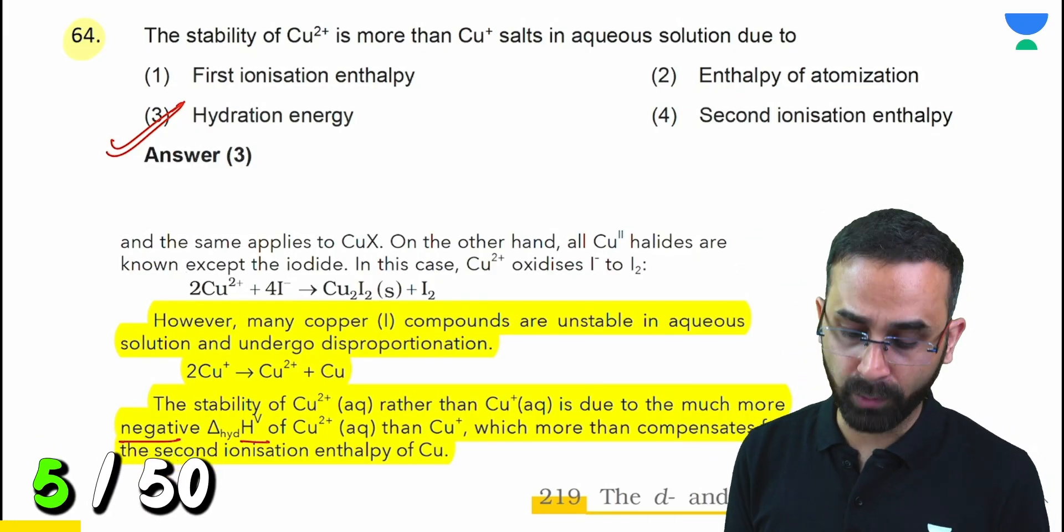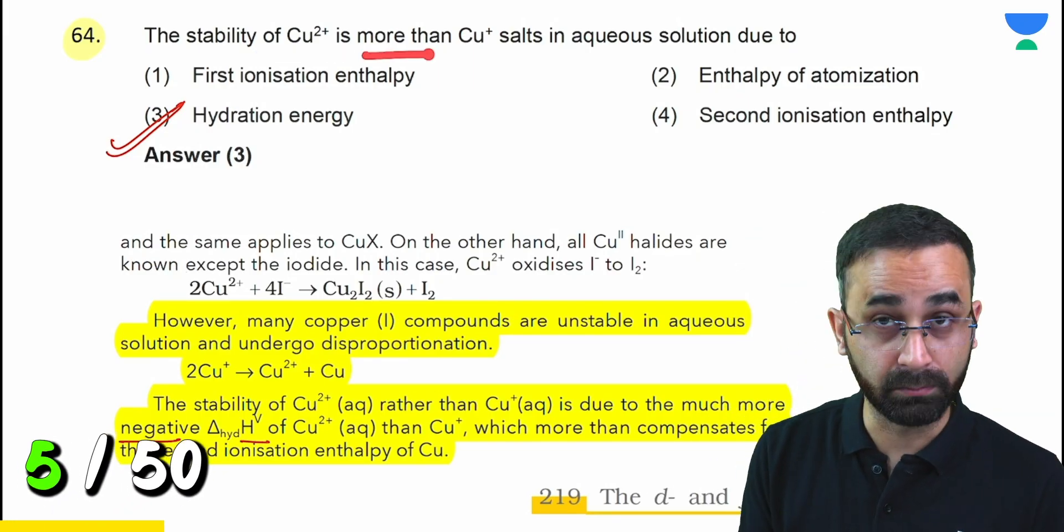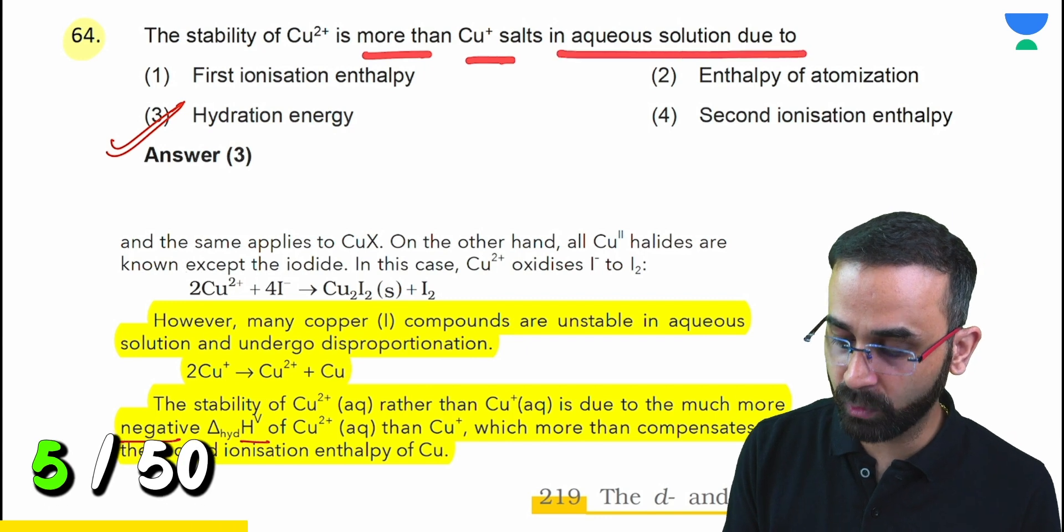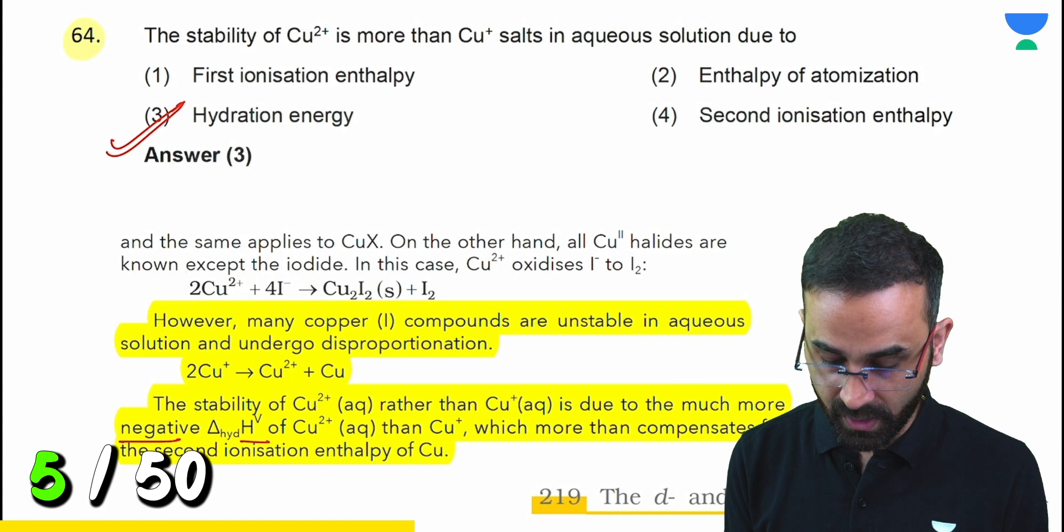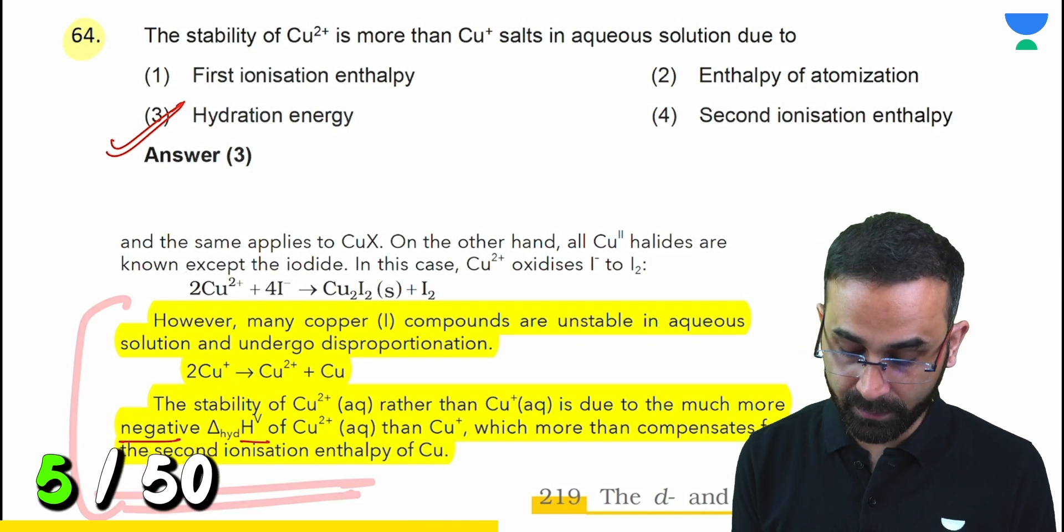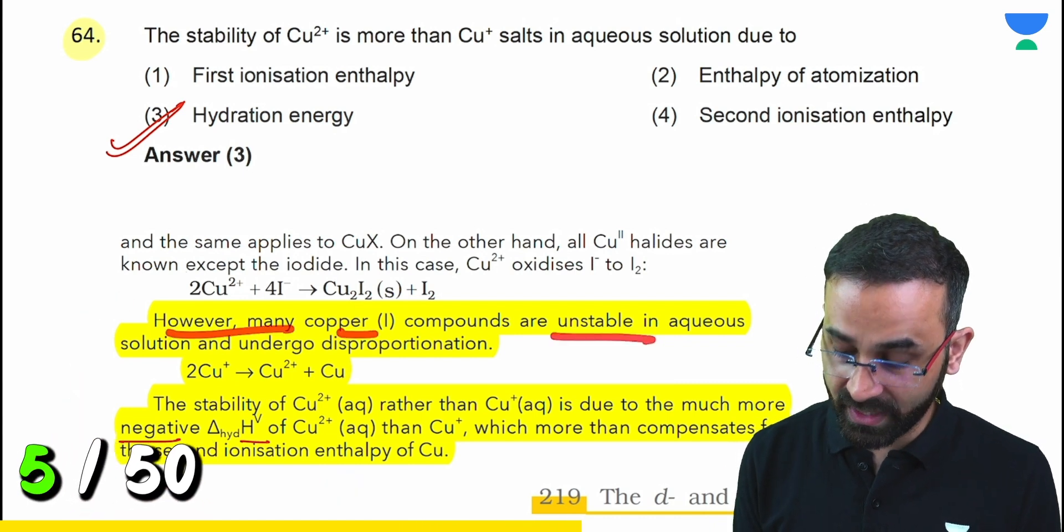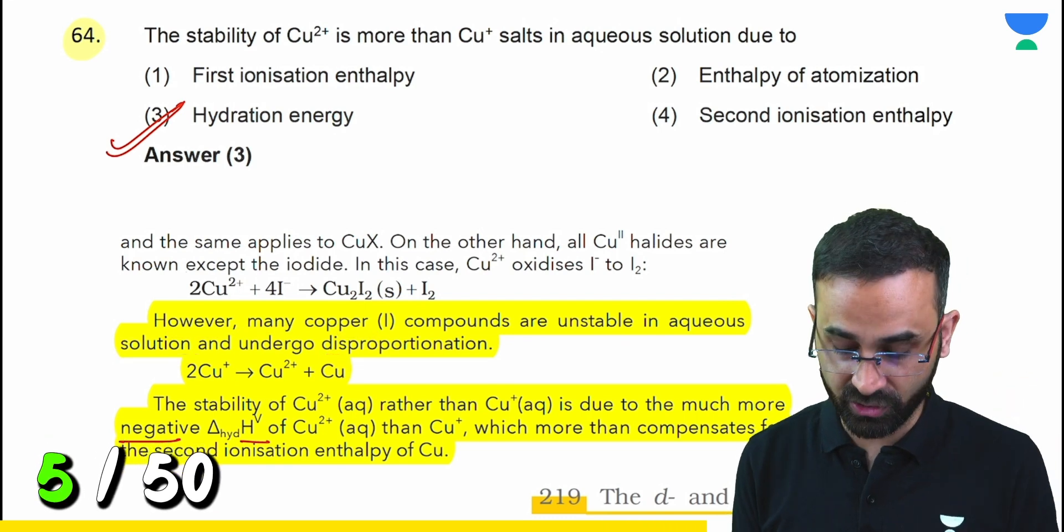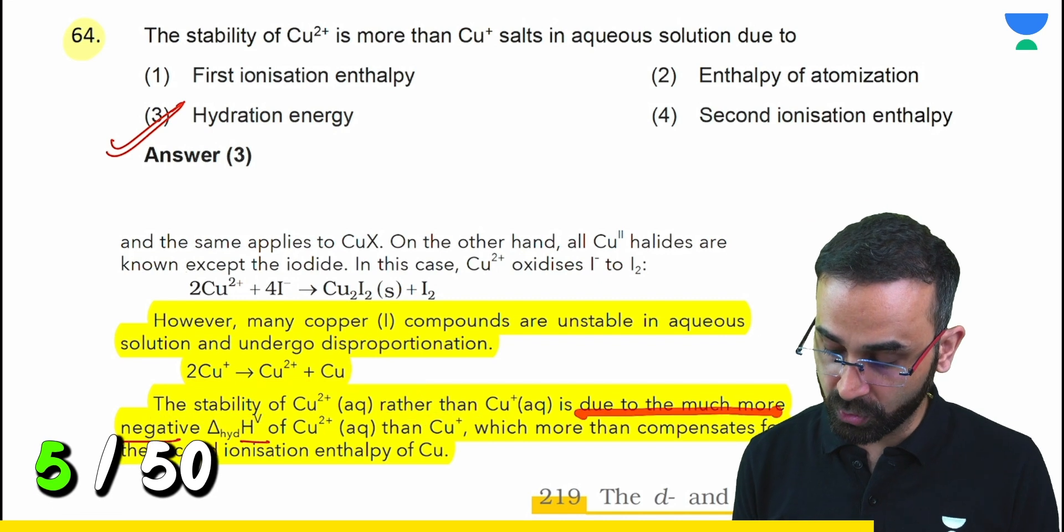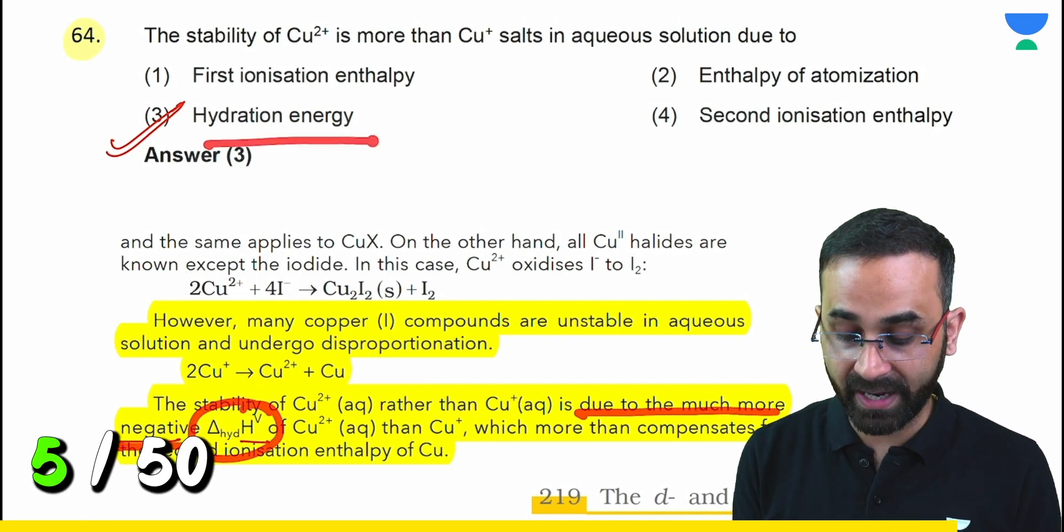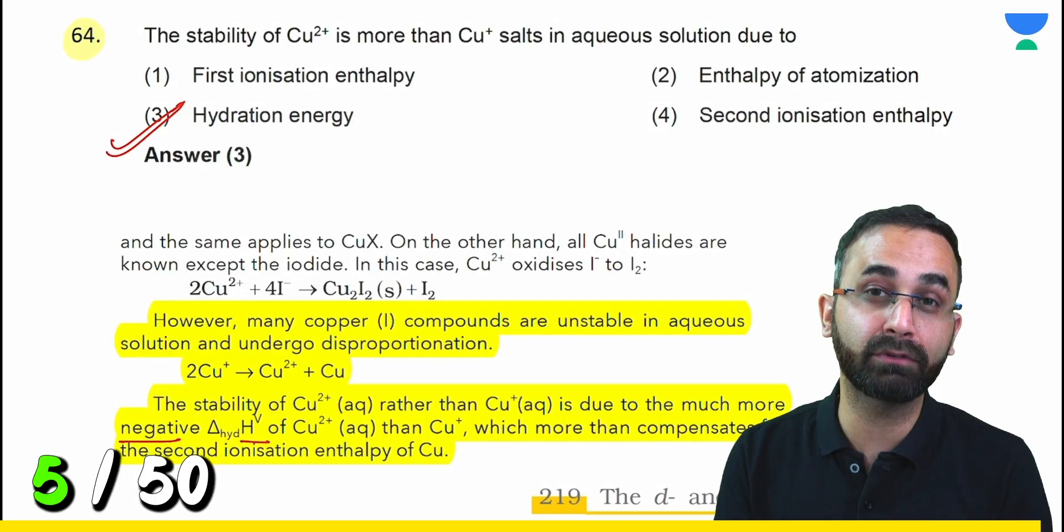This question from D and F-Block: the stability of Cu²⁺ ion is more than Cu⁺ in aqueous solution. Page 219 of NCERT Class 12 D and F-Block elements. The statements are perfectly mentioned: many Cu⁺ compounds are unstable in aqueous solution and undergo disproportionation. The stability of Cu²⁺ rather than Cu⁺ is due to much more negative ΔH hydration. Directly from NCERT.